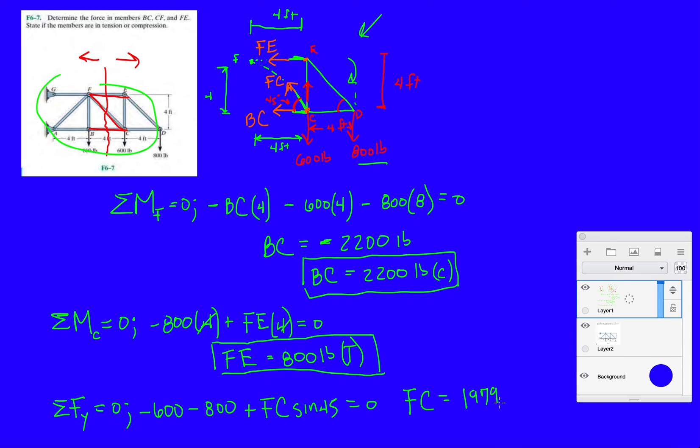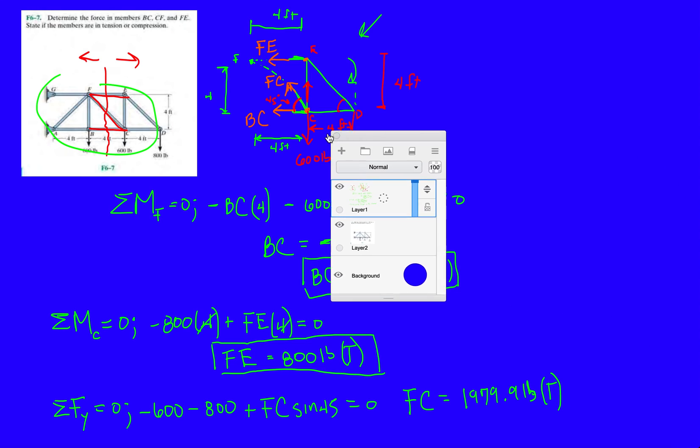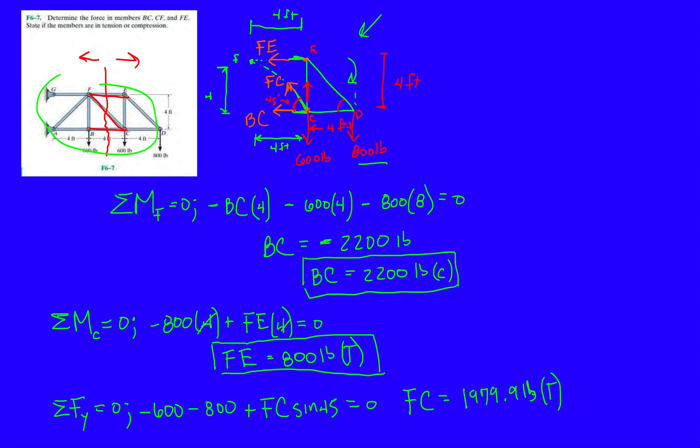Notice how our answer is going to be positive here, so it's 1979, the year I was born, just kidding. 1979.9 pounds in tension. Oh, let's move this, no wonder it seems so small. And that is it.